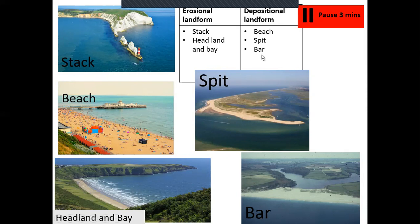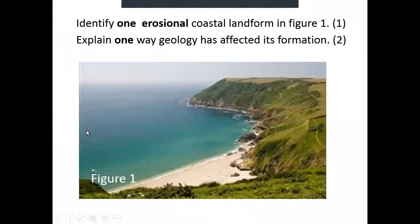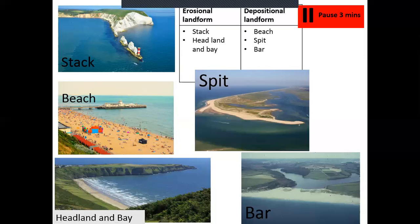For depositional landforms, sediment has been dropped. To create the beach, sand needs to be dropped — constructive waves have dropped the sand to create the beach. For the spit in Norfolk, the sand has been dropped in the sea and created this spit, which has been there so long that grass and vegetation have started to grow. A bar is just an extended spit — the sand has been deposited by the sea to create that bar. If deposition hadn't happened, there would be no sand there, and the sea and the lagoon would be connected. So the bar has been formed by deposition.